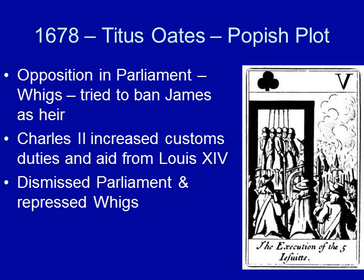Then in 1678, we have the Titus Oates plot — the Popish Plot. The opposition in Parliament, the Whigs, tried to ban James's succession because of this supposed plot to execute Charles II, supposedly involving Charles's wife and his brother. Charles II was not happy about this. An illustration from the period survives on a playing card — someone actually made playing cards depicting the Popish Plot.